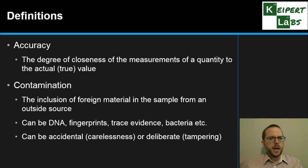And then thinking about contamination, we're thinking about the inclusion of foreign material in the sample from an outside source. It could be something like DNA, fingerprints or trace evidence, bacteria or other kind of foreign material. It could be purely accidental, just through carelessness, or it could also be deliberate contamination for a range of reasons.